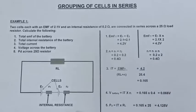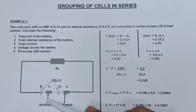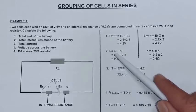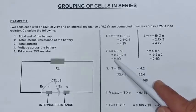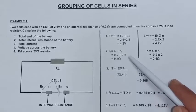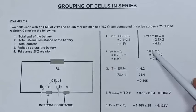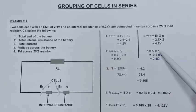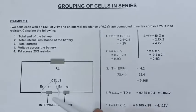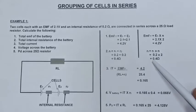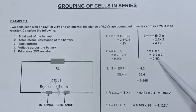Next is calculating the total internal resistance of the battery, which is R1 and R2. That is calculated the same way by adding, giving me 0.4 ohm. Equally, because they are identical, I can say R1 multiplied by N, which is the number of internal resistances, which is 2, and that also gives me 0.4 ohm.